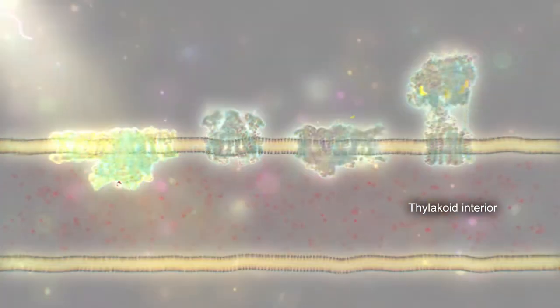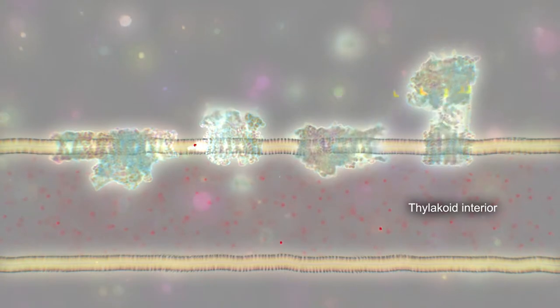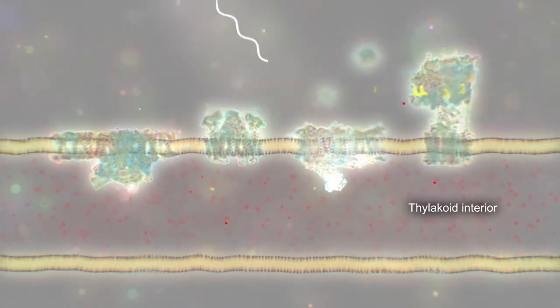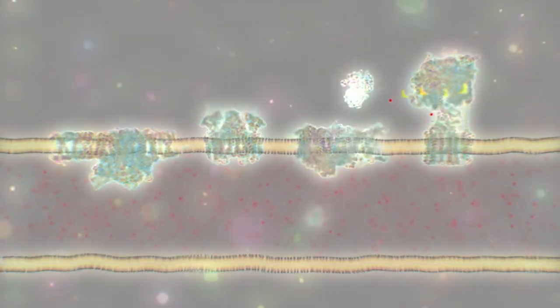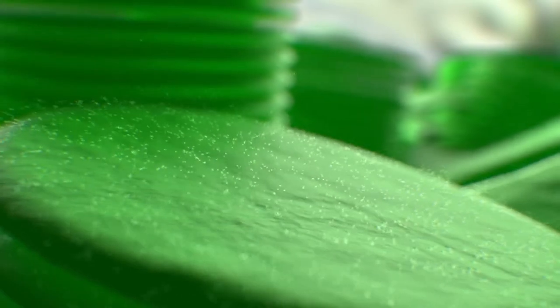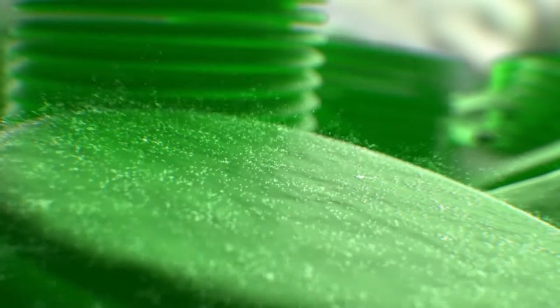Sunlight excites chlorophyll and associated proteins to convert water and carbon dioxide into sugars that can be burned as energy for plant growth or stored as starch, making maize a valuable crop for human use.